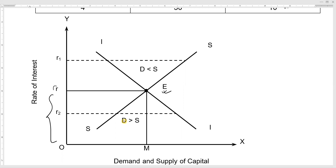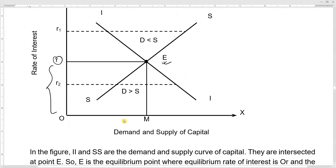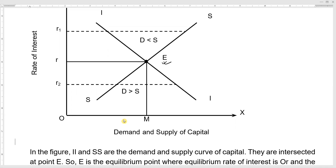These two curves intersect at point E. At that point, the rate of interest OR is the equilibrium rate of interest, and OM is the equilibrium amount of capital where demand for capital equals supply of capital.